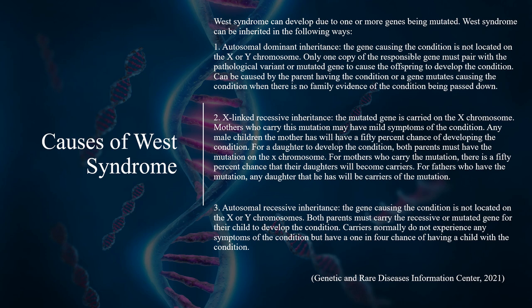In X-linked recessive inheritance, the mutated gene is carried on the X chromosome. Mothers who carry this mutation may have mild symptoms of the condition. Any male children the mother has will have a 50% chance of developing the condition. For a daughter to develop the condition, both parents must have the mutation on the X chromosome. Mothers who carry the mutation have a 50% chance their daughters will become carriers, and any daughter of an affected father will be a carrier.